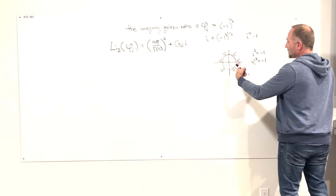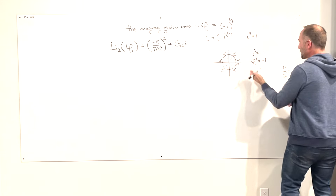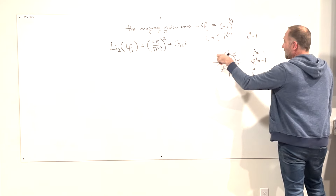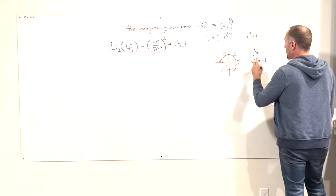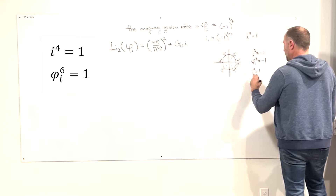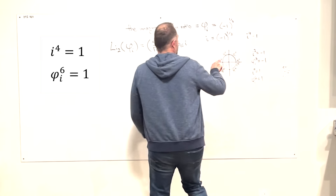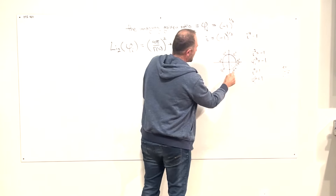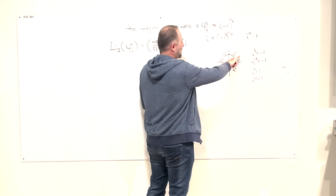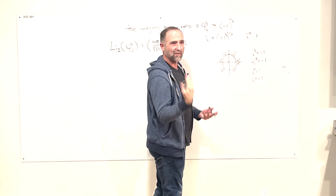There's another place they match — every time you go around. So there are multiple matches between them, and you can generalize. i to the fourth equals one, and imaginary golden ratio to the sixth equals one. Another representation: imaginary golden ratio to the fifth is one over imaginary golden ratio — it's like rotating the other direction in steps of the imaginary golden ratio.